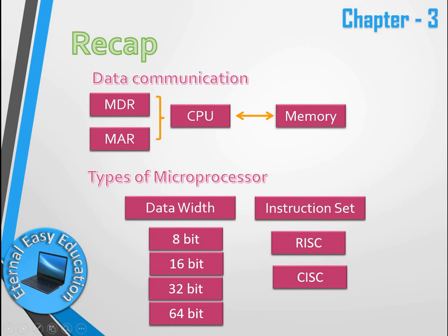To recap: you have learned data communication involving MDR and MAR inside the CPU, and communication between the CPU and memory. Processors are classified based on data width — 8, 16, 32, or 64-bit — and based on instruction set, divided into Reduced Instruction Set Computers (RISC) or Complex Instruction Set Computers (CISC). That's all for this session. Thank you and have a good day.